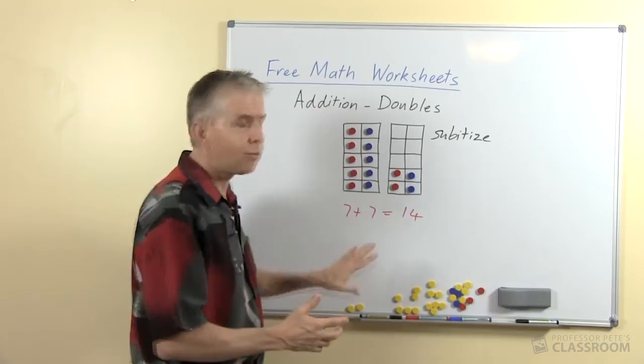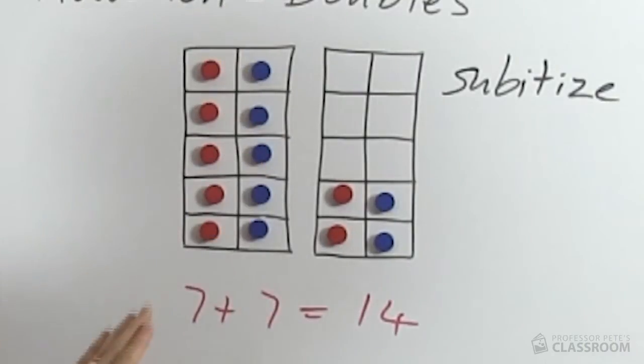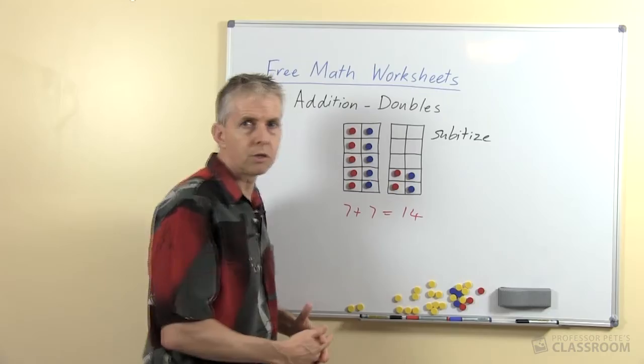That will help because if we double the 5 obviously there's 10, then whatever's left if we double that, in this case double 2 is 4.